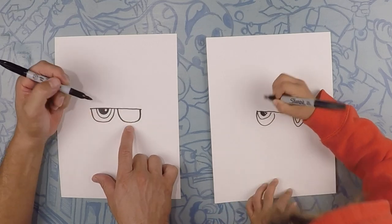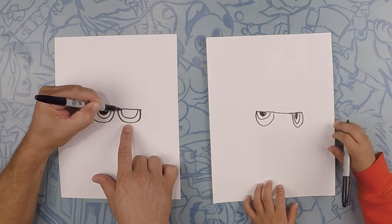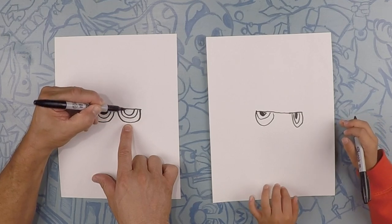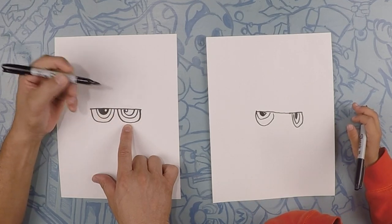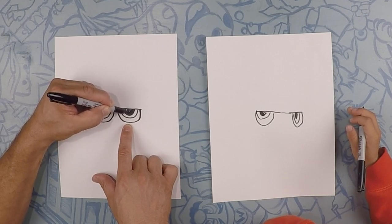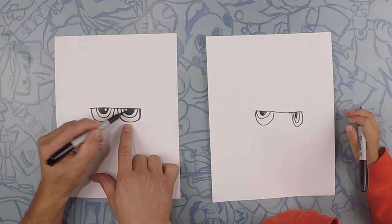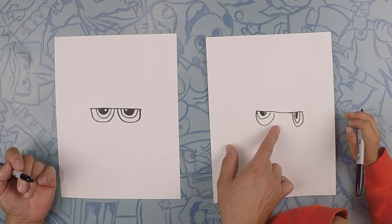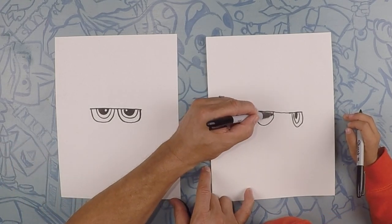So the same thing on this side. So we got the daddy and then we do a mommy eye, a kid eye and then a wee baby eye. So we color in the kid eye. Perfect. Good. Your Frankenstein has got awesome crazy eyes.